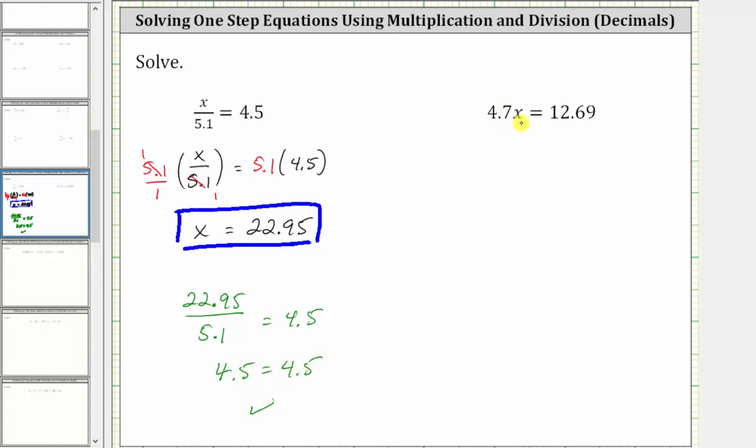For the second example, we have 4.7x equals 12.69. So again, our goal is to determine the value of x that satisfies the equation or makes the equation true by isolating x on one side of the equation. 4.7x means 4.7 times x. To undo the multiplication and solve for x, we need to divide both sides of the equation by 4.7.